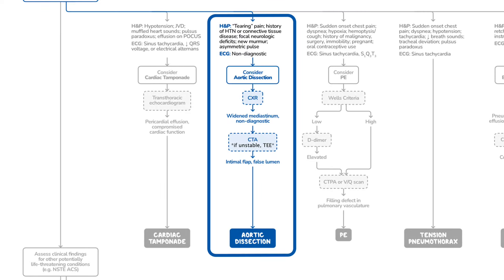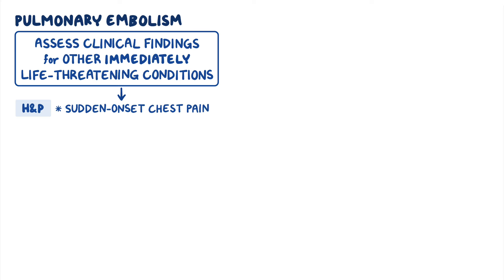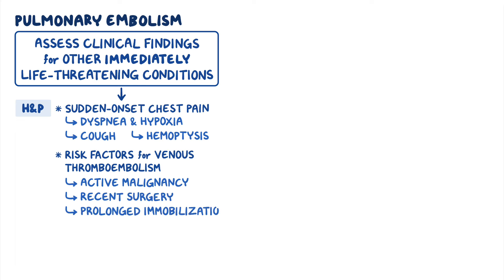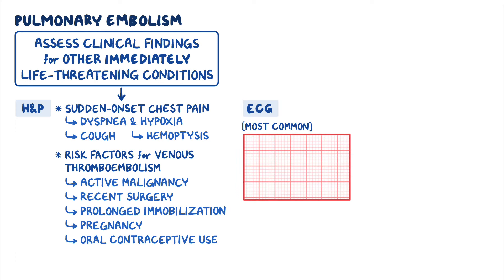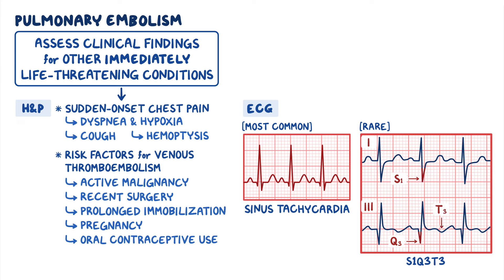Another common and sometimes life-threatening cause of chest pain is pulmonary embolism, or PE. You should suspect PE in a patient who presents with sudden onset chest pain associated with dyspnea, hypoxia, cough, and hemoptysis, especially if they have risk factors for venous thromboembolism like active malignancy, recent surgery, prolonged immobilization, pregnancy, or oral contraceptive use. The most common ECG finding for PE is actually just sinus tachycardia. A rare but specific ECG finding for PE is S1, Q3, T3, where there's a prominent S wave in lead 1, Q waves in lead 3, and inverted T waves in lead 3.